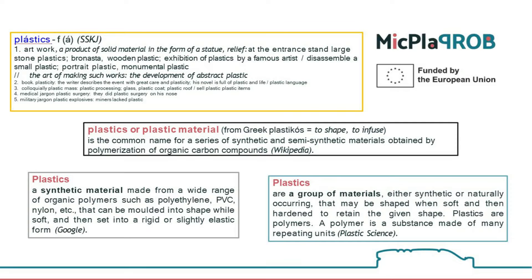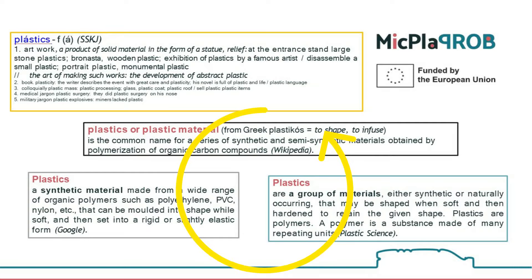How to find the definition of plastic and microplastics, and how to find a connection between them. There is a massive amount of information available on the internet today. In addition to the dictionary of the standard Slovenian language, I also searched for the definition of plastic on Wikipedia and on Google's browser. The illustrations or descriptions differ from each other — they are similar in general but not as exact as we have defined plastic in other lessons. When looking for information, we should use the most relevant sources.